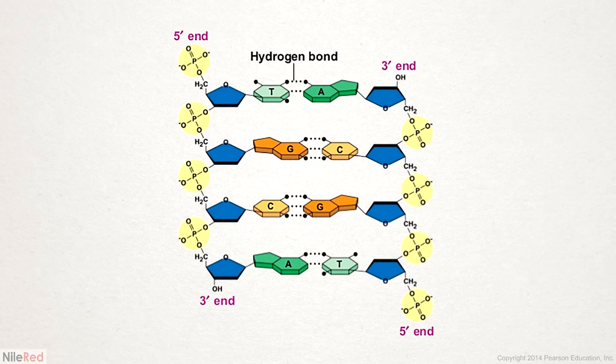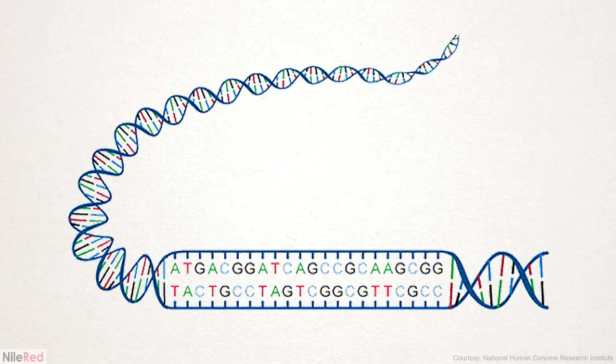It gets a little more complicated though, because DNA isn't just one chain — it's actually two, and they're held together by interactions between the nitrogenous bases. This interaction is known as hydrogen bonding, where A likes to pair with T and C with G. This hydrogen bonding, along with various other intermolecular forces, twists the DNA into its characteristic ladder-like structure known as a double helix.